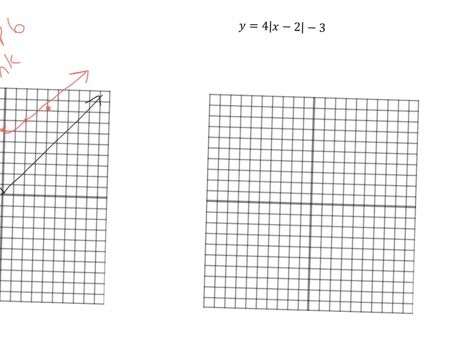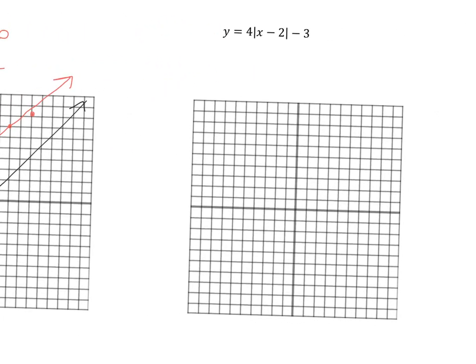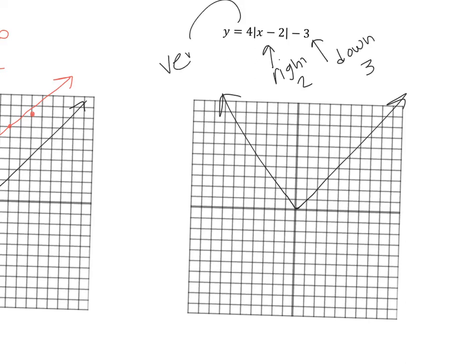For the last example, graph the parent function first. This function shifts right 2 and down 3. The coefficient is greater than 1, so it's a vertical stretch with a slope of 4. Go to the vertex at right 2, down 3, then go up 4, right 1 on one side and up 4, left 1 on the other — resulting in a very narrow V-shape.